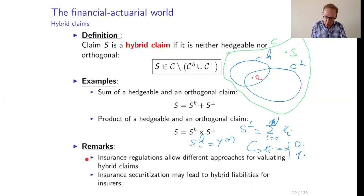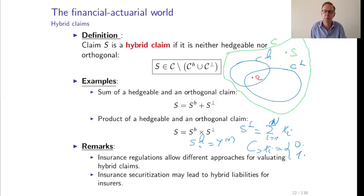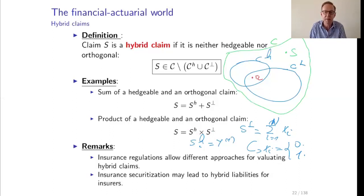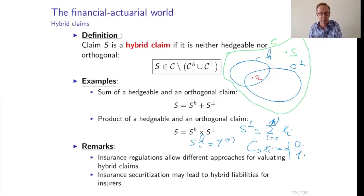Some remarks: first, insurance regulation allows different approaches for evaluating hybrid claims. The Solvency II regulation says to extract the hedgeable part and price it by the cost of the hedge, but for a product — unlike a sum — there are different ways to detect the hedgeable part. You can choose different decompositions. For a sum it is clear; for a product it is not.